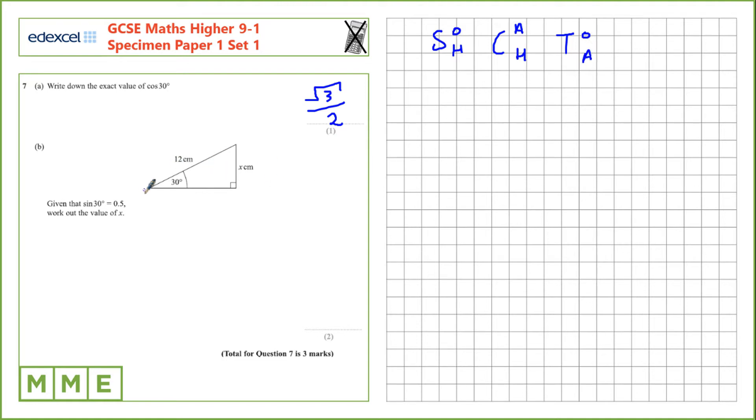So in this case let's label the sides. We've got our angle here. This is opposite. That's the longest side which is our hypotenuse. We want to work out the opposite and we have the hypotenuse so we're going to select sine.